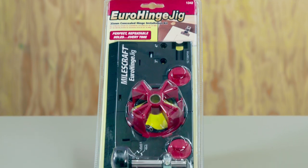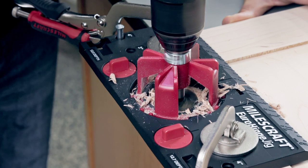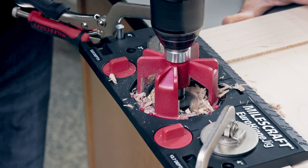The Miles Craft Euro Hinge Jig takes the guesswork out of installing European style concealed hinges. Easy to use, anyone can create professional, quality cabinetry quickly and accurately.